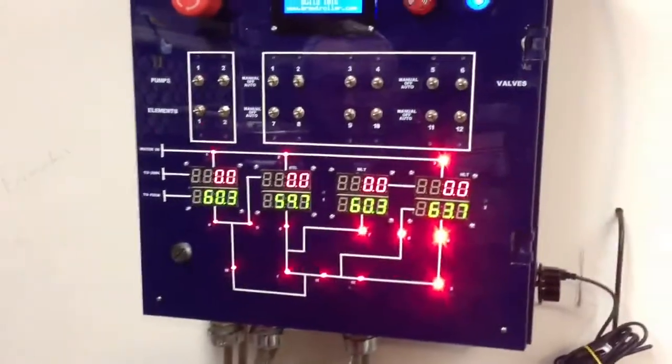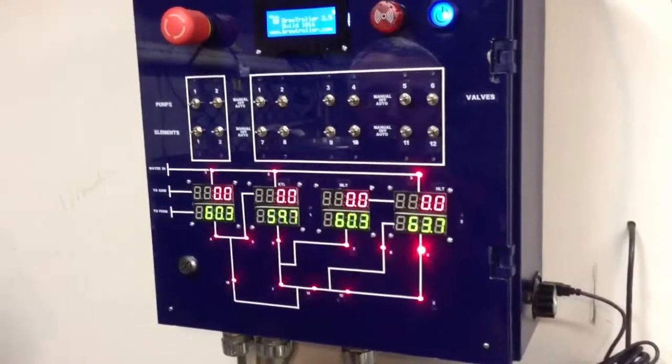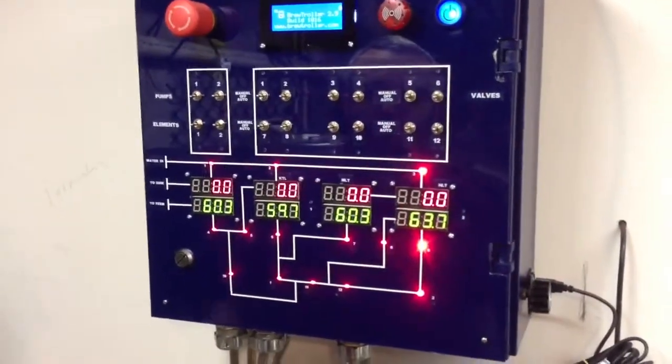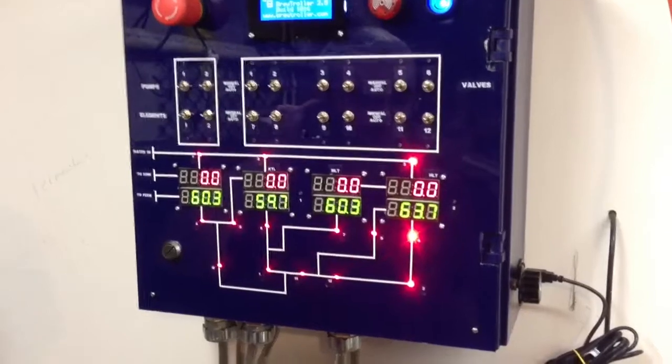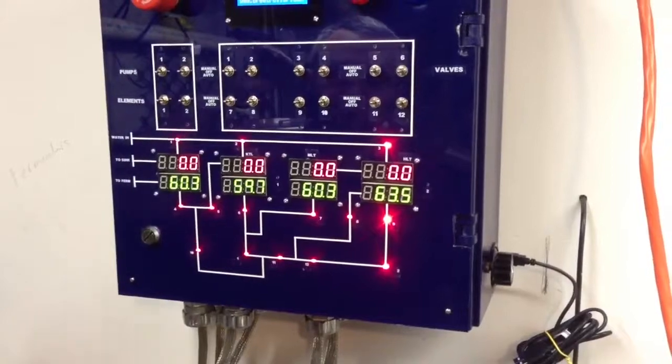Currently you can see that the lower lights on the bottom are all red. That just tells us that the electronic valves that's going to control flow are closed. And then as the switches light up, these will change to green, which means the flow is opening up.